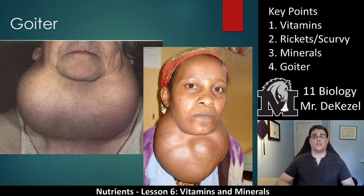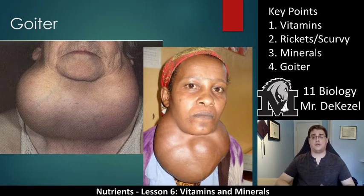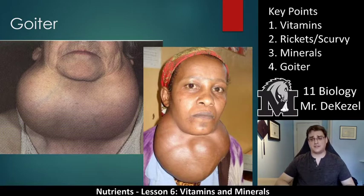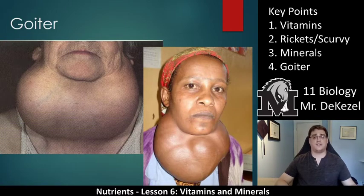A swollen thyroid gland is known as a goiter, and it is often due to a lack of iodine in the diet or a lack of iodine uptake in your body. You might be eating it but be unable to uptake it, and therefore you get these goiters or enlarged thyroid glands. Minerals can prevent this — it seems like something very simple, very easy to ingest, to prevent these kinds of things.